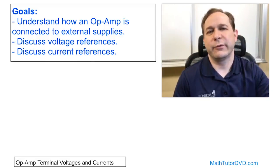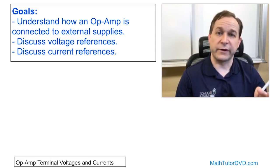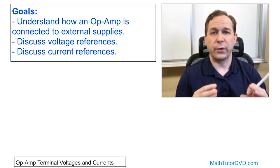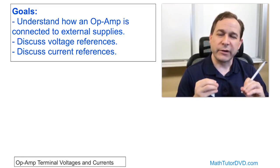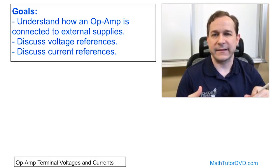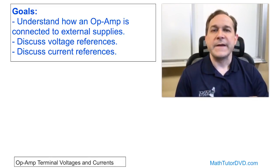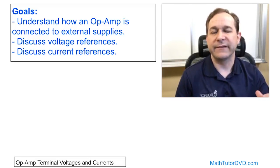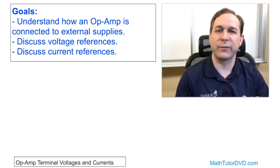We want to talk about the voltage references and the current references — drawing circuits and showing you the reference directions you need to keep in mind: where the voltages are, their polarities, where the currents are, and their polarities. We're going to do a quick analysis of the basic op amp, writing down Kirchhoff's voltage law and Kirchhoff's current law with an op amp in the middle. You have to have the reference directions in place to do that, and at the end you'll understand fundamentally how the op amp works.